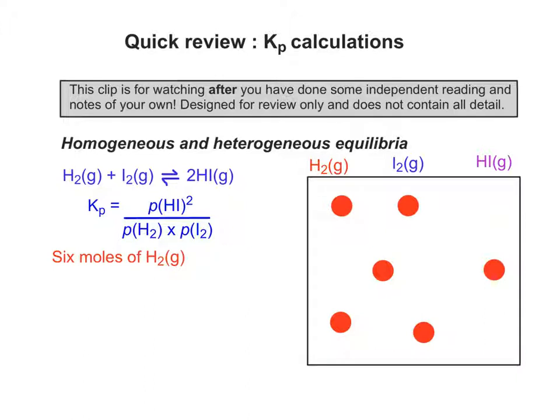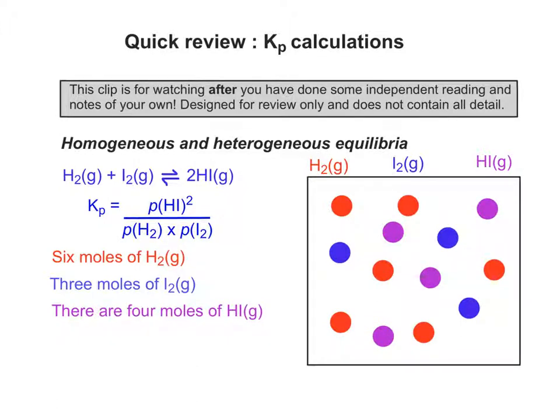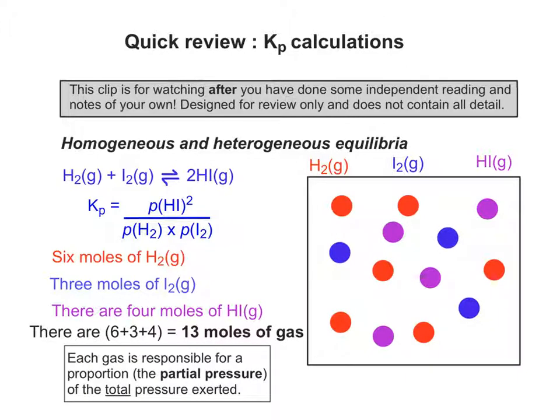we can say there's six moles of hydrogen gas, there's three moles of iodine vapour, so that gives us 13 moles of gas in total.